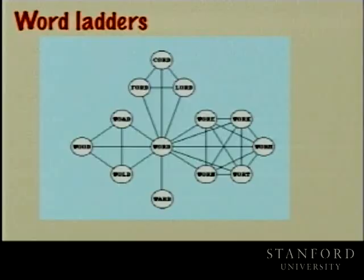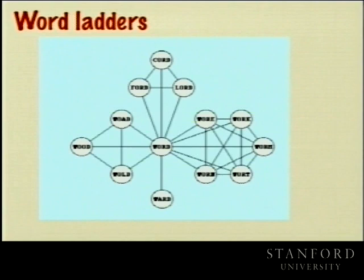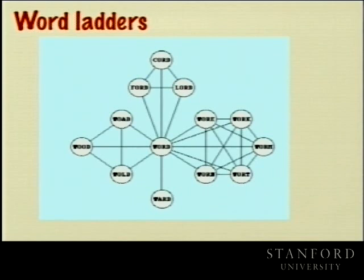Another idea of something represented as a graph supports the notion of word ladders — puzzles where you're given the word 'chord' and want to change it into 'worm', changing one letter at a time. The connections have to do with words that are one character different from their neighbors. Each node represents a word, and paths represent word ladders. You might want to find the shortest word ladder, or how many different ways you can go from one word to another.